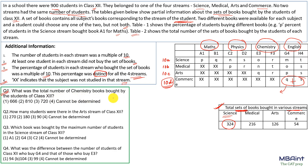Question one asks for the total number of chemistry books bought by students in class 12. Chemistry books are bought by students from science, medical, and arts streams, but not commerce. The total number of students who bought books in science is 324, in medical is 216, and in arts is 126. Since it is a set of books, the number of students buying each subject book — including chemistry — is the same within each stream.